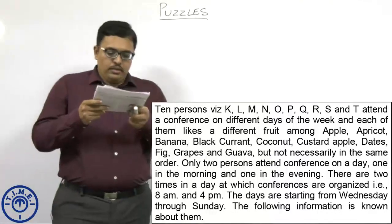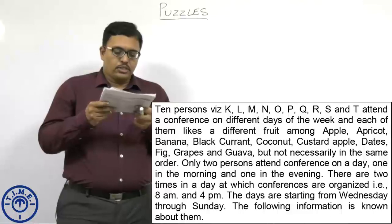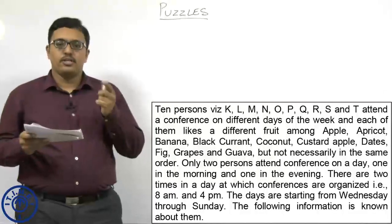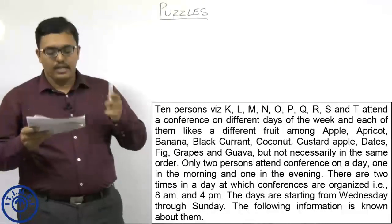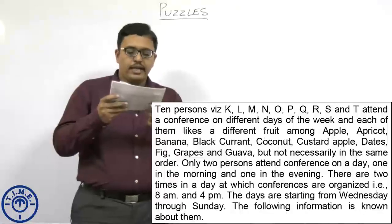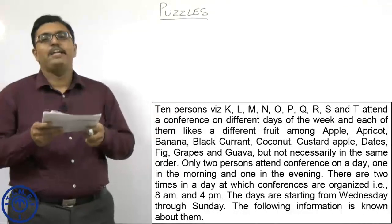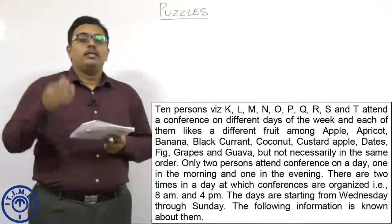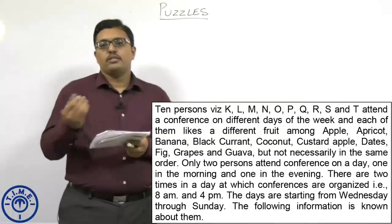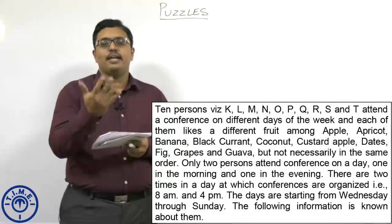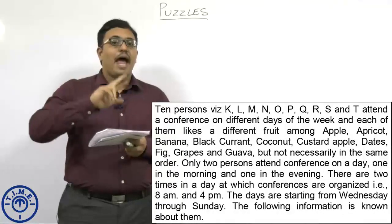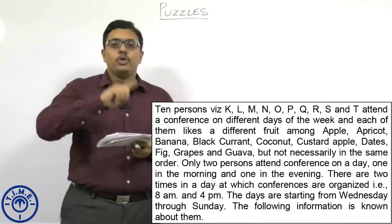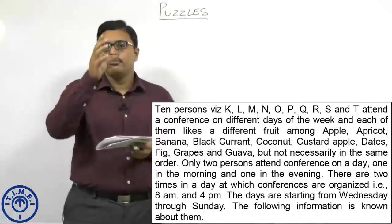Only 2 persons attend the conference on a day, one in the morning and one in the evening. There are 2 times in a day at which conferences are organized: 8AM and 4PM. The days are starting from Wednesday through Sunday — Wednesday, Thursday, Friday, Saturday, and Sunday — so 5 days and 2 time slots per day, giving 10 slots total.